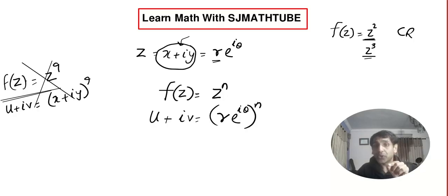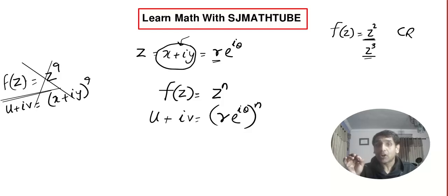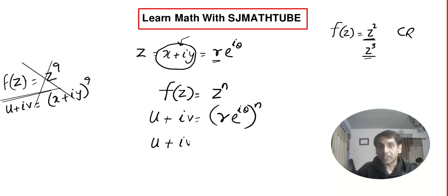By the way, in case you don't know what r and theta are, pause the video right now and watch the revision — I have clearly explained what is the polar form of a complex number. For those who are okay with this, let's continue. So u + iv = r^n · e^(inθ).